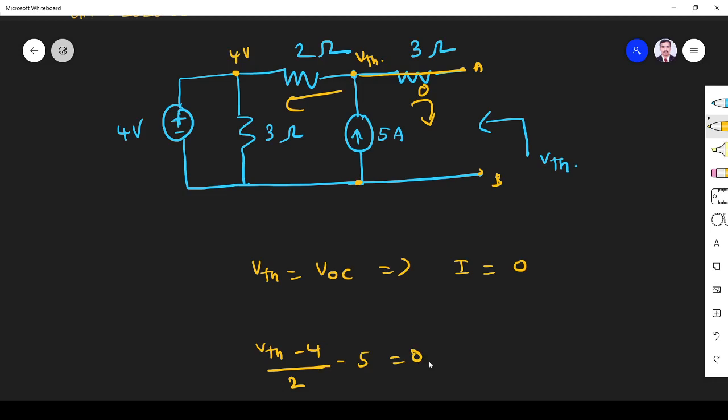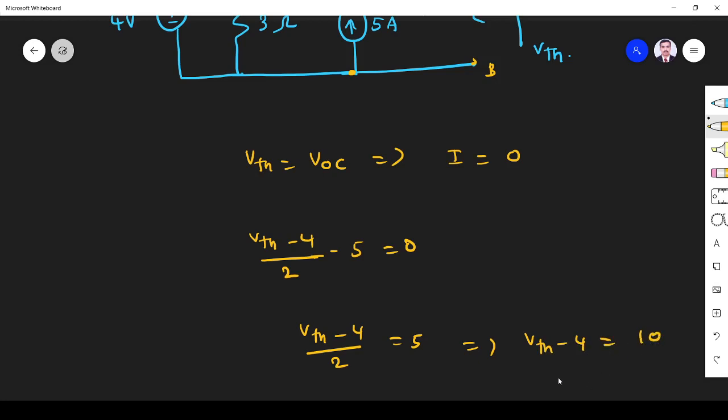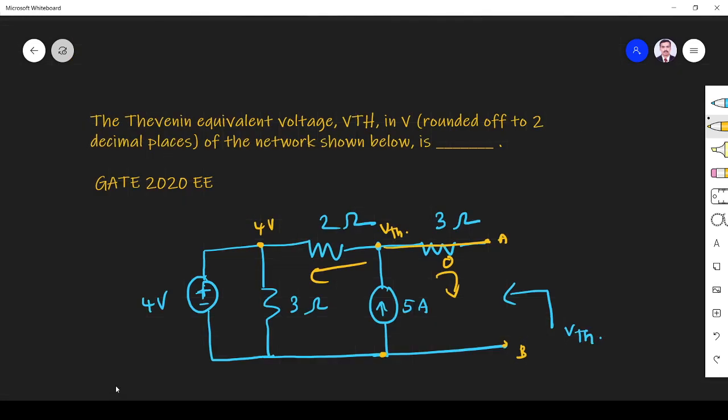Minus this equals zero. This implies V-Thevenin minus four by two equals five. This equals V-Thevenin minus four equals ten, then V-Thevenin is fourteen point five zero volts. So what is the answer? It is 14.5. So this is fine, thank you.